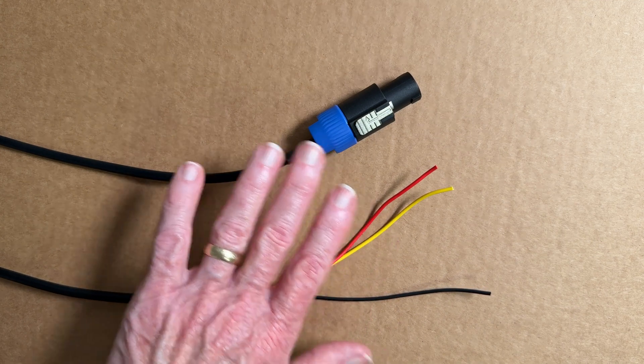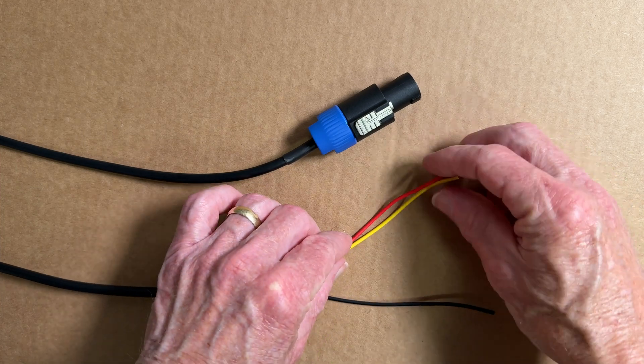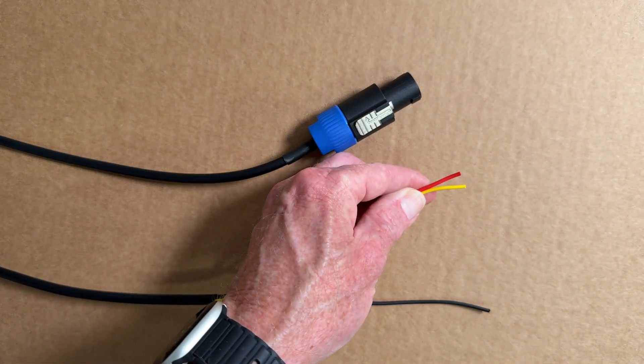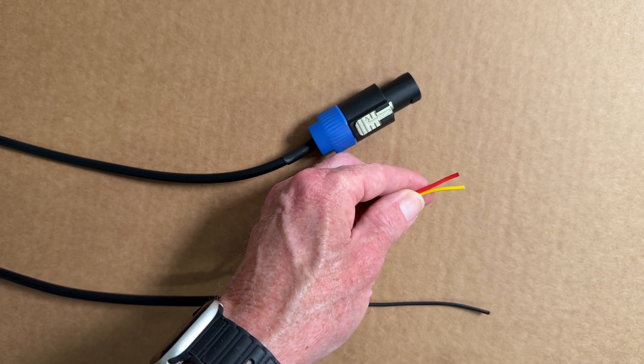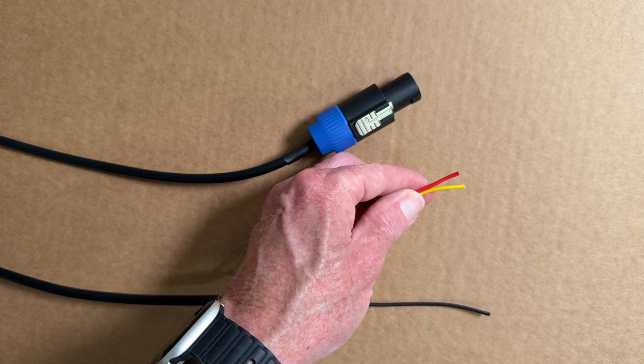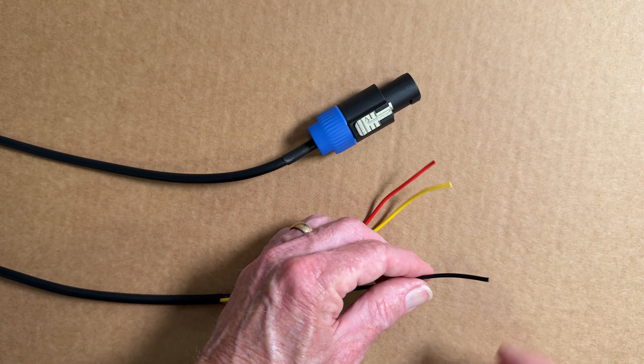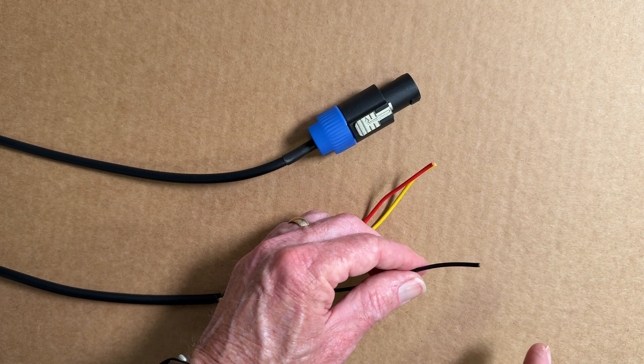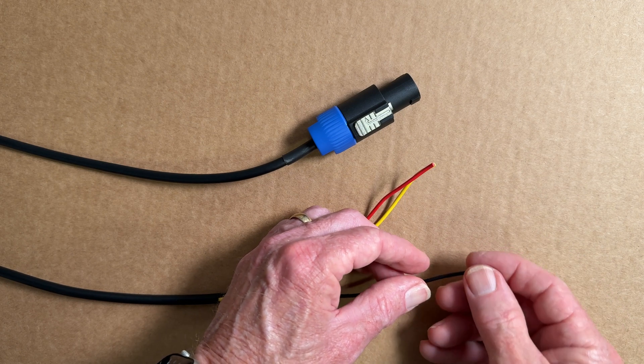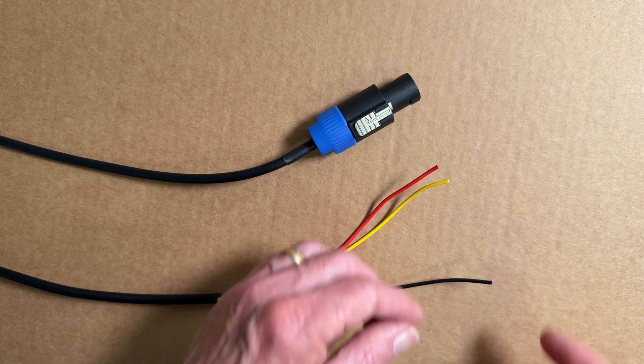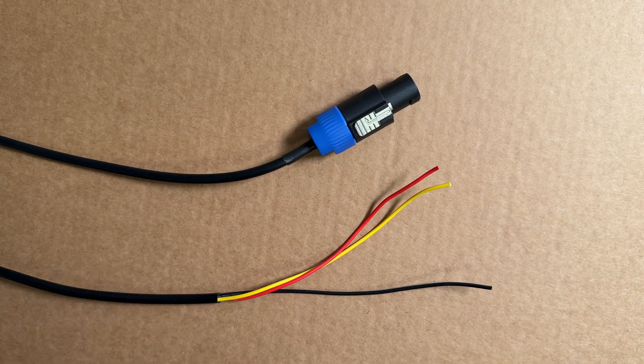Now I'm running two REL subwoofers, so what I do on mine is I combine the red and yellow and hook it to the correct speaker positive. The left subwoofer hooks to the left speaker, the right subwoofer hooks to the right speaker positive. Both negatives for both subwoofers were joined together and grounded to the chassis. This is REL's recommended hookup method and it works wonderfully except I had a terrible hum in the subwoofers.